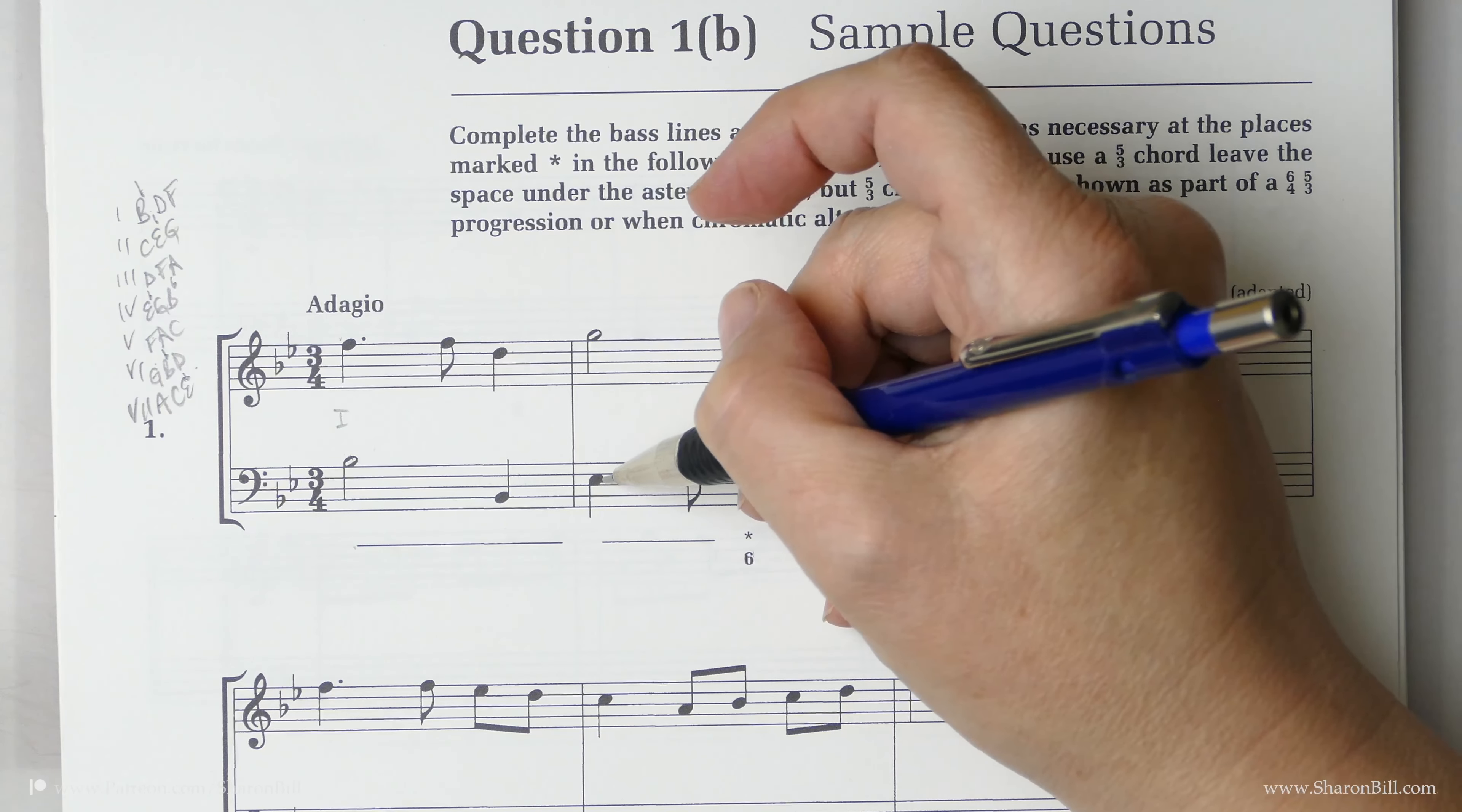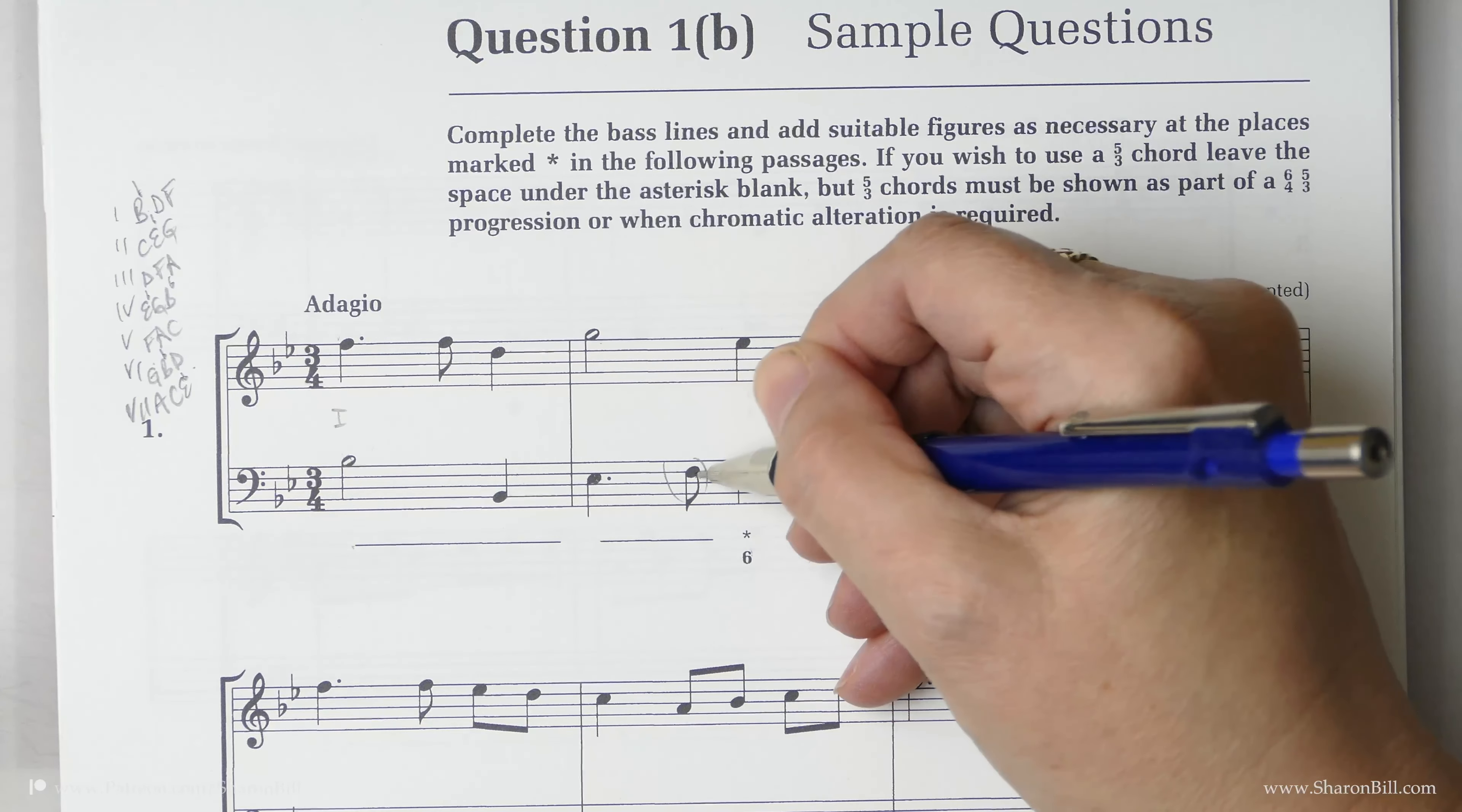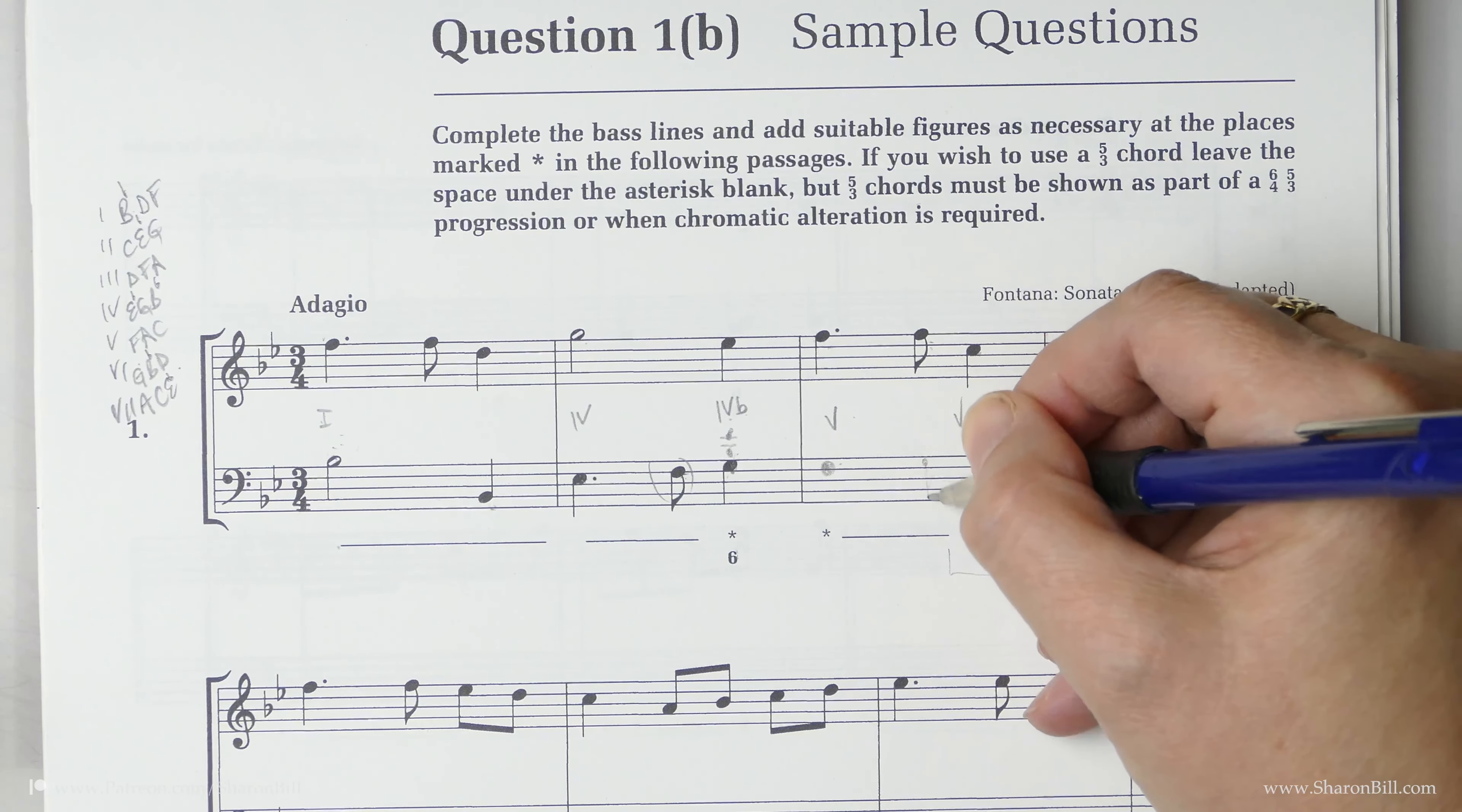So here we have an E flat and a G. E flat, that's a passing note just passing stepwise in between. That's a harmony note, that's a harmony note, and then filling in the gap in between by step is a passing note that's not really part of the harmony. There's a new harmony so now that is crying out for a passing note which is like we've had here.